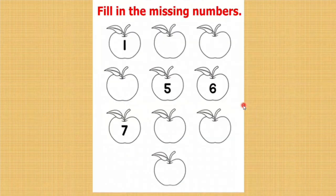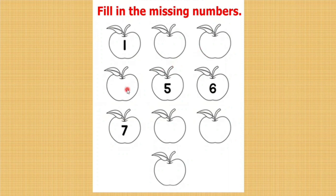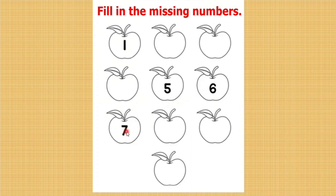Let us do one more worksheet based on missing numbers. Here the first number is 1, and after that the number is missing. After this, the number is missing. After this, the number is missing. Then 5 is there, 6 is there, 7 is there. After 7, the number is missing, and then again the number is missing, and here also the number is missing. We have to fill all these missing numbers. Let us start.